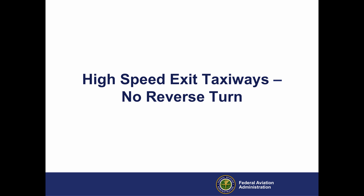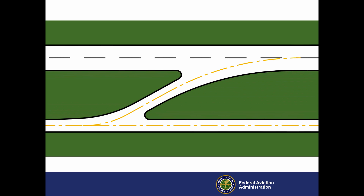A high-speed exit taxiway is a special type of taxiway constructed to allow airplanes to exit the runway in less time and distance than is needed to slow to the speed necessary for a 90-degree turn. We'll first discuss high-speed exit taxiways without reverse turns. All high-speed exit taxiways form an angle of 30 degrees with the runway centerline, and the radius of the turn off the runway is always 1,500 feet.